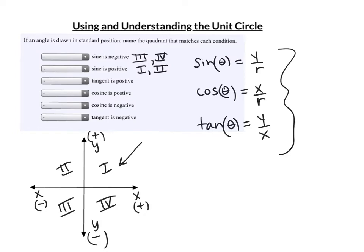Where is tangent positive? Well, tangent is y over x. In quadrant 1, y and x are both positive. In quadrant 3, y and x are both negative, and since a negative divided by a negative is positive, tangent is positive in quadrants 1 and 3. Where is cosine positive? Cosine is x over r, and x is positive in quadrants 1 and 4, so cosine is positive in quadrants 1 and 4.